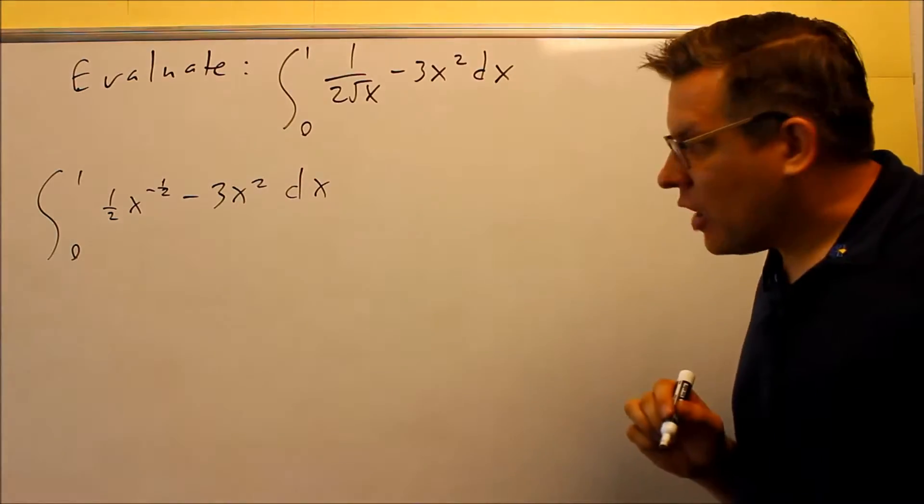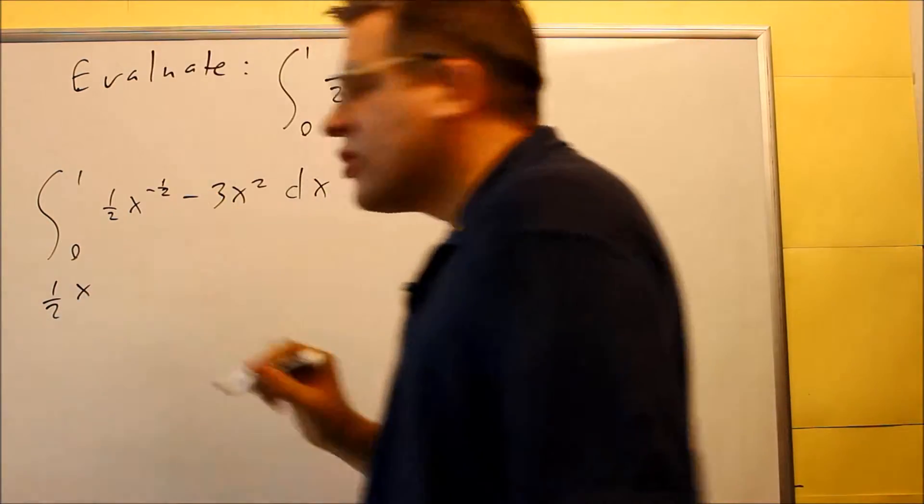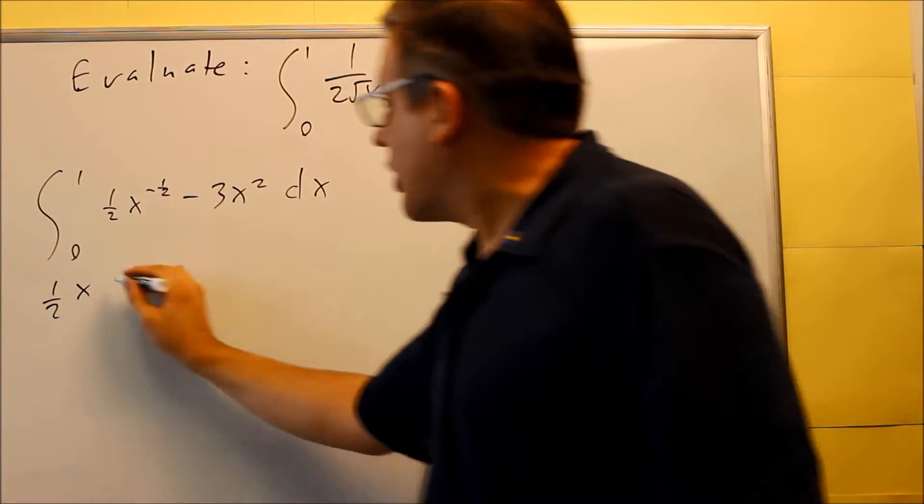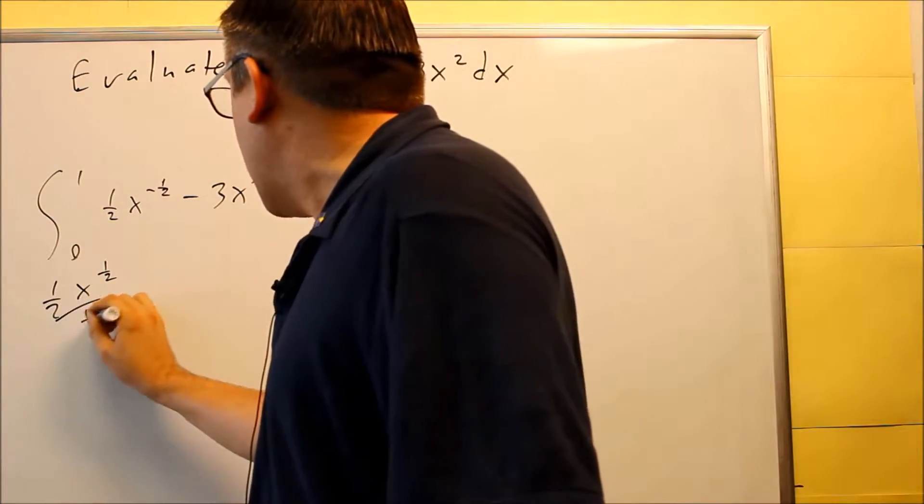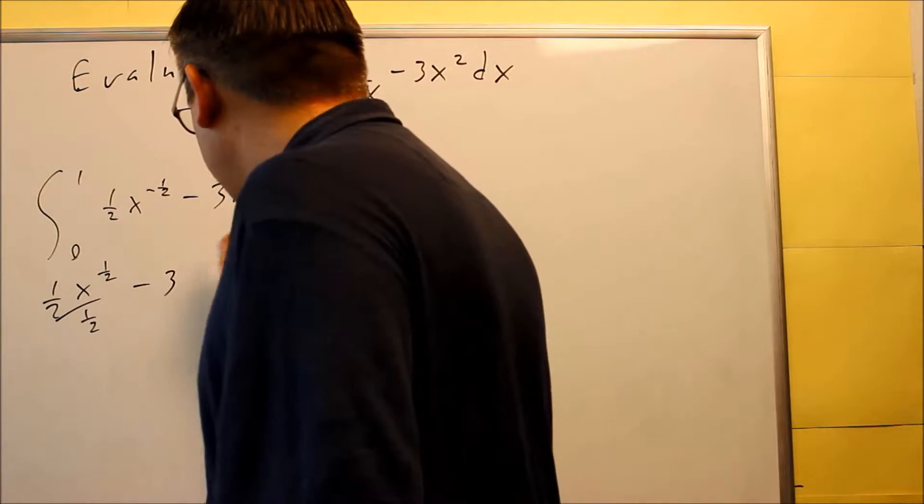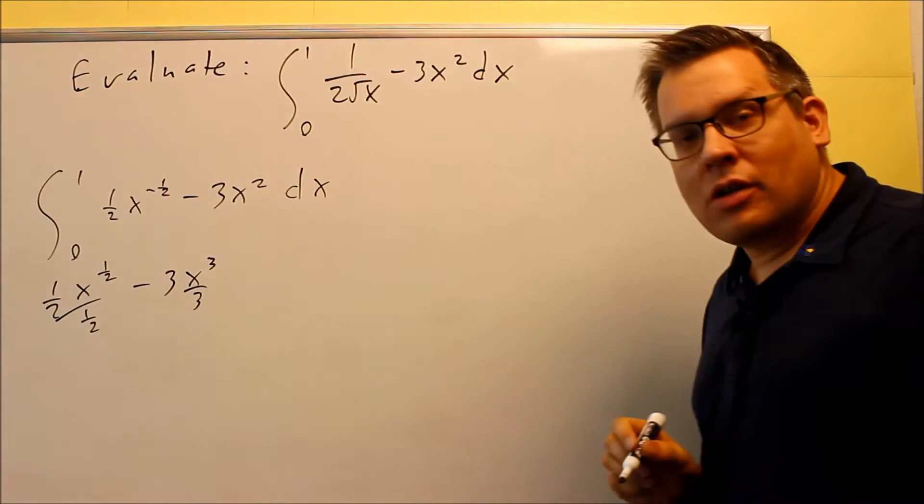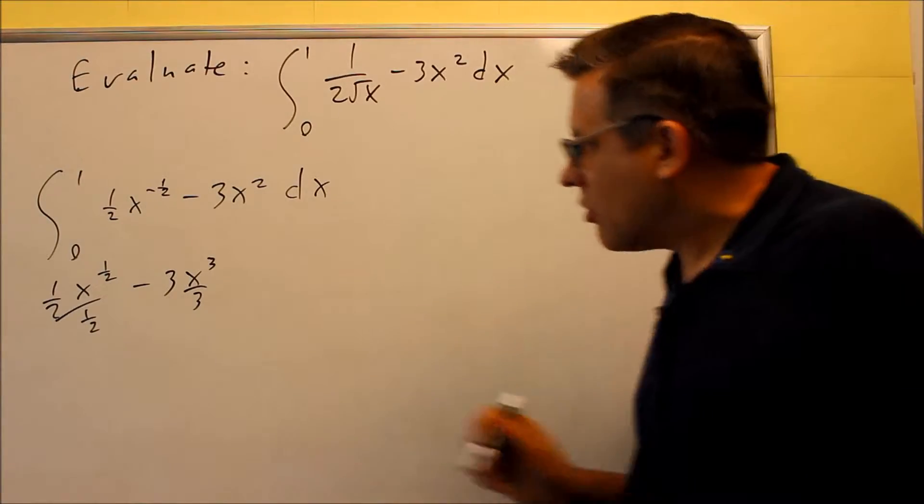Now ready to apply our inverse power rule. Raise the power by 1. If I add 1 to this, I get positive 1/2 divided by 1/2, so 1/2 will cancel. And then this one, raise the power by 1 divided by new power, I get 3 over 3. That's going to cancel also.